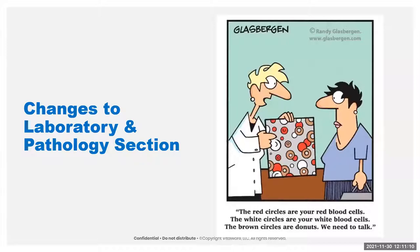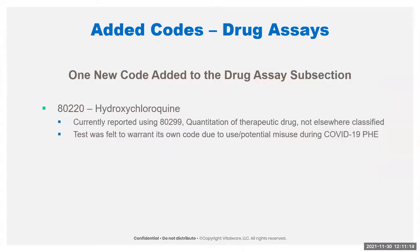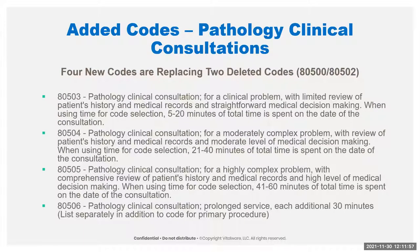Moving on to lab and pathology — the changes here just seem to get more and more each year. We have one new code in the drug assay subsection for hydroxychloroquine. That drug was used a lot and purported to be useful for COVID at a certain point, so it was being used heavily with just a non-specific code up to now. They wanted to be able to track that one in particular due to the COVID public health emergency. I kept the next item in this section because I can see it being used for hospital-based pathologists.